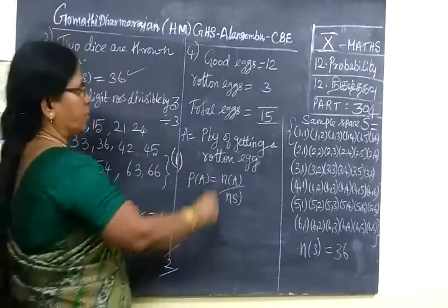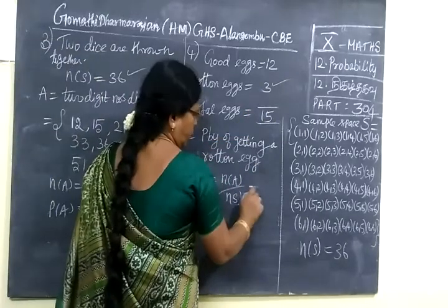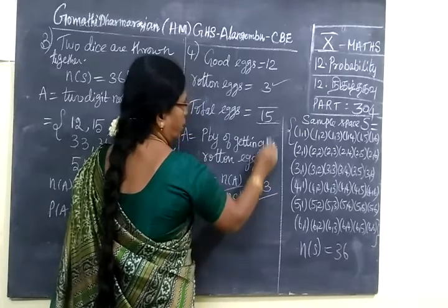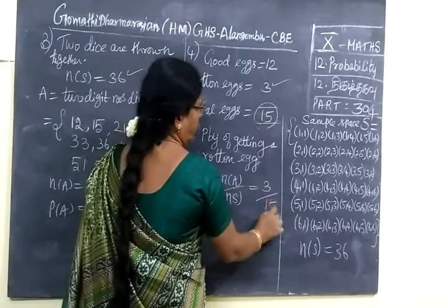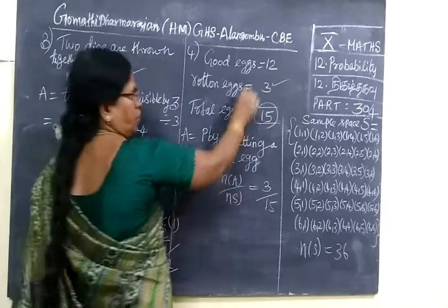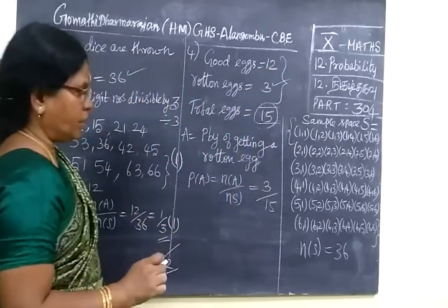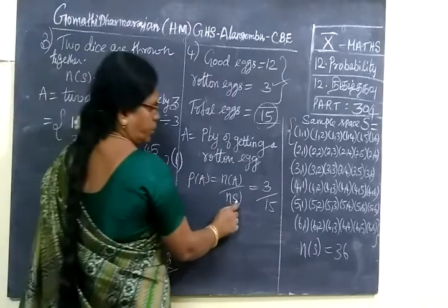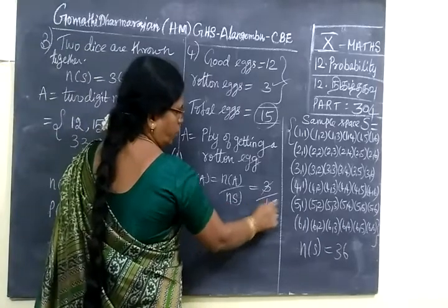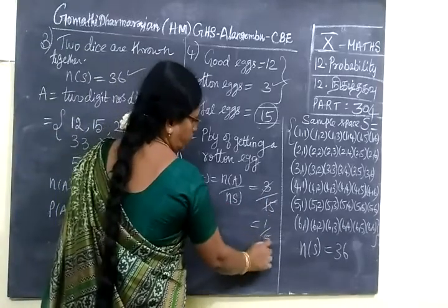A is the event of selecting a rotten egg. So how many rotten eggs we have? 3. So 3 by total is 15. This 15 you should write, not this 12. So this number of good eggs, number of rotten eggs you are adding. So the total N of S equal to 15.